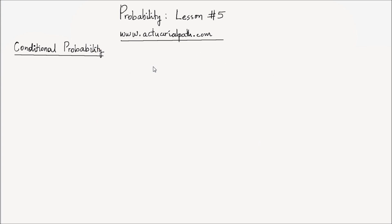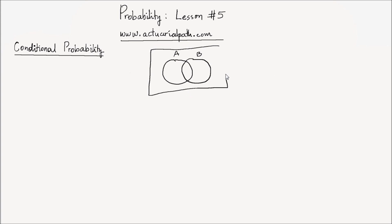Suppose we have two events, let's say A and B, which are subsets of the sample space S. The intersection between A and B, which I am shading in black here, explains the relationship between the events A and B, and that is A intersection B.